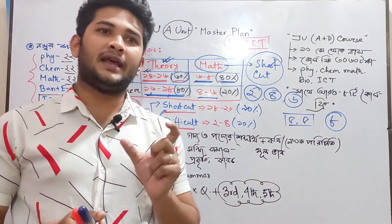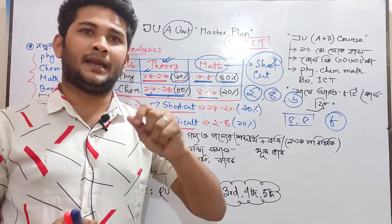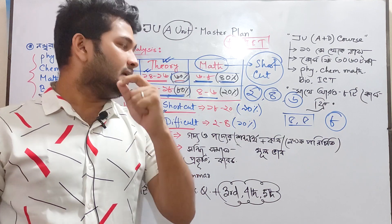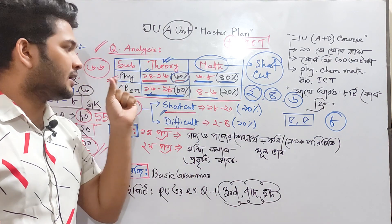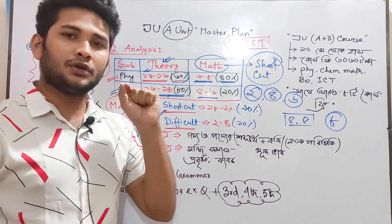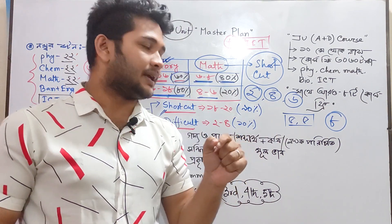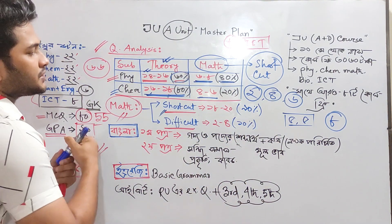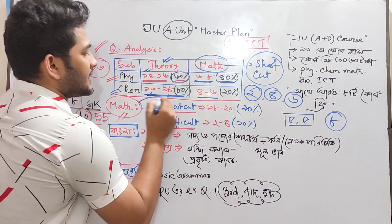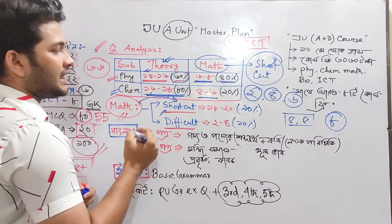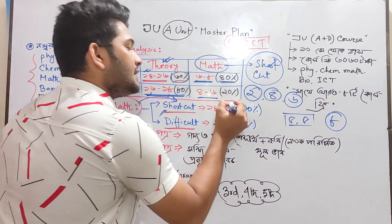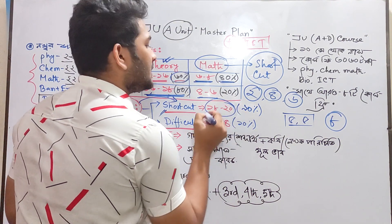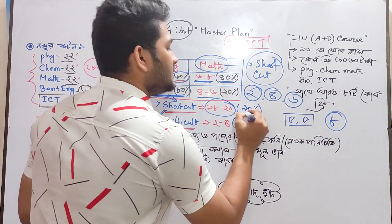Differentiation by integration is 0, 1, equal. Math is another way to do math. The meta of math is a shortcut technique. Yes, use a shortcut technique.